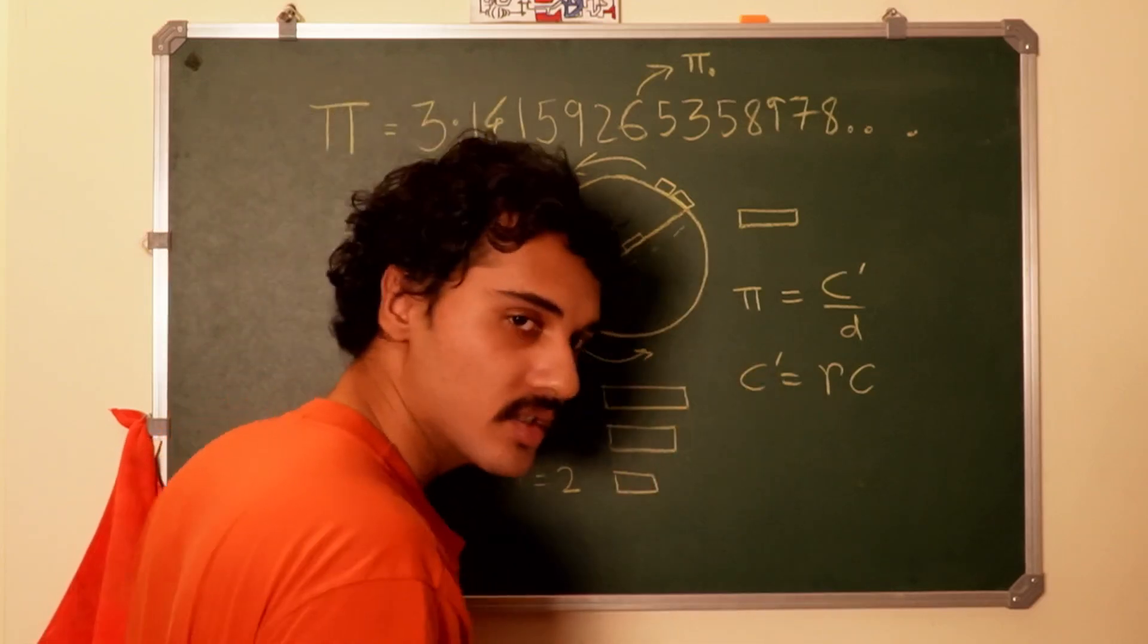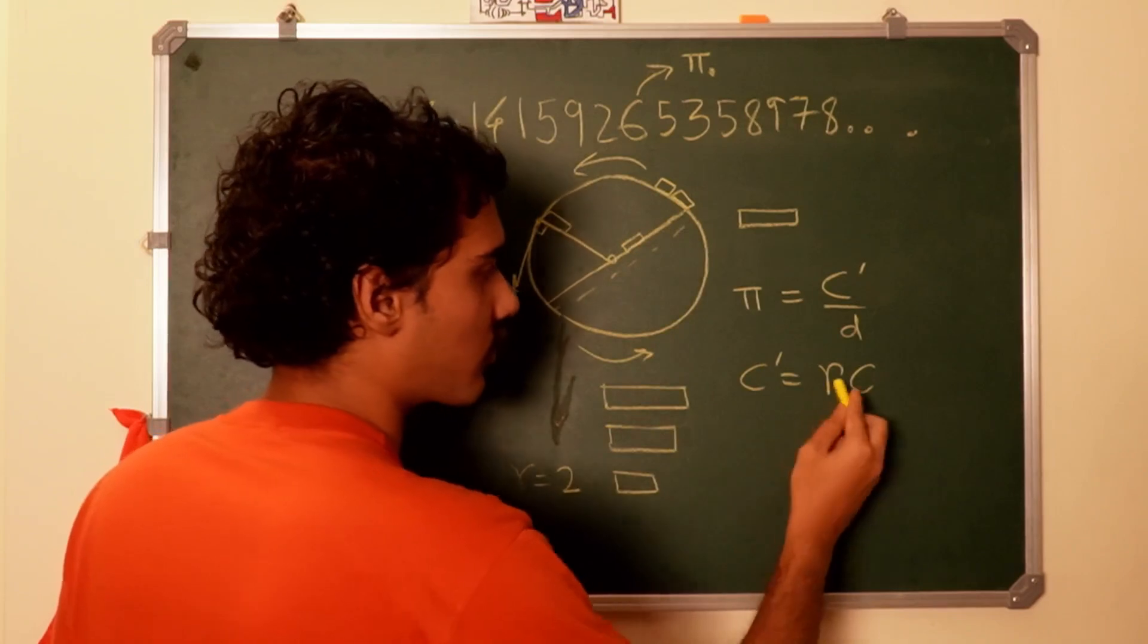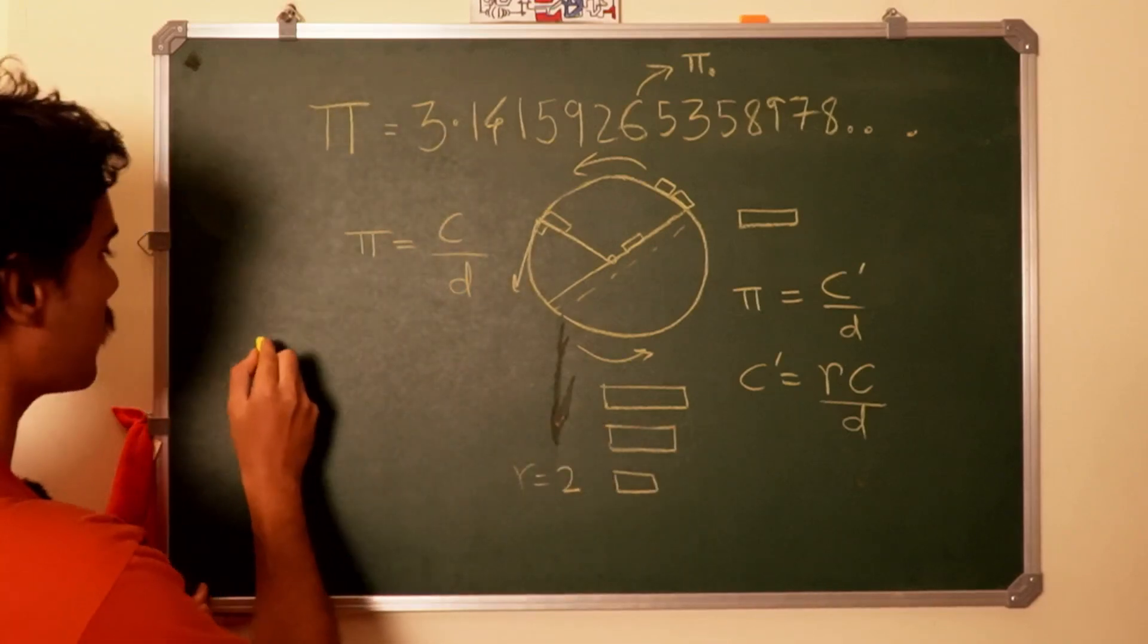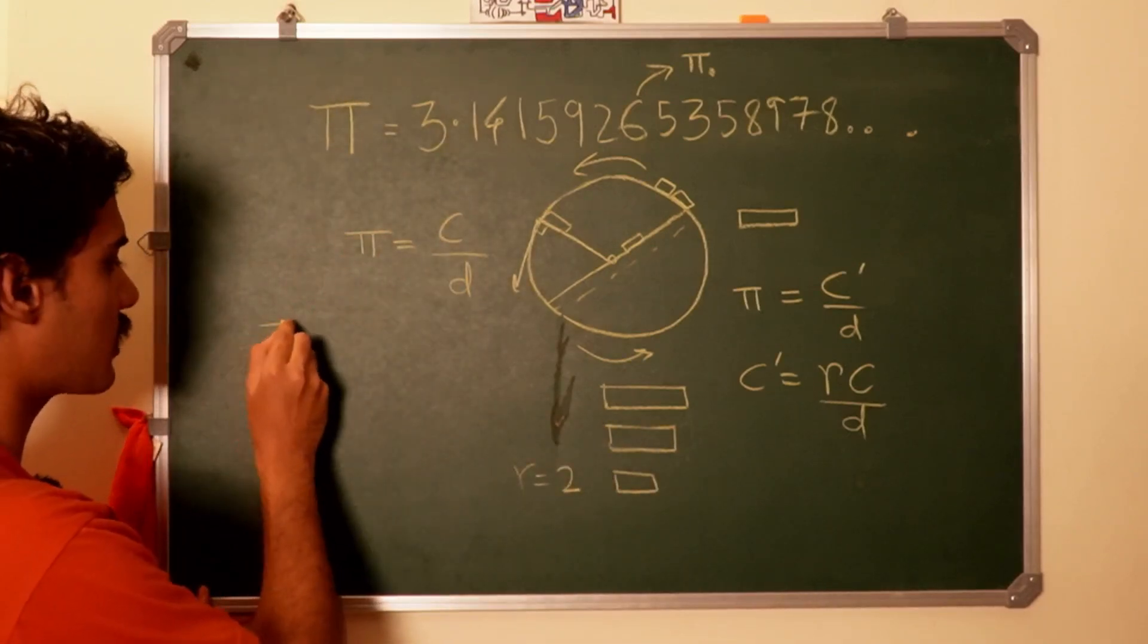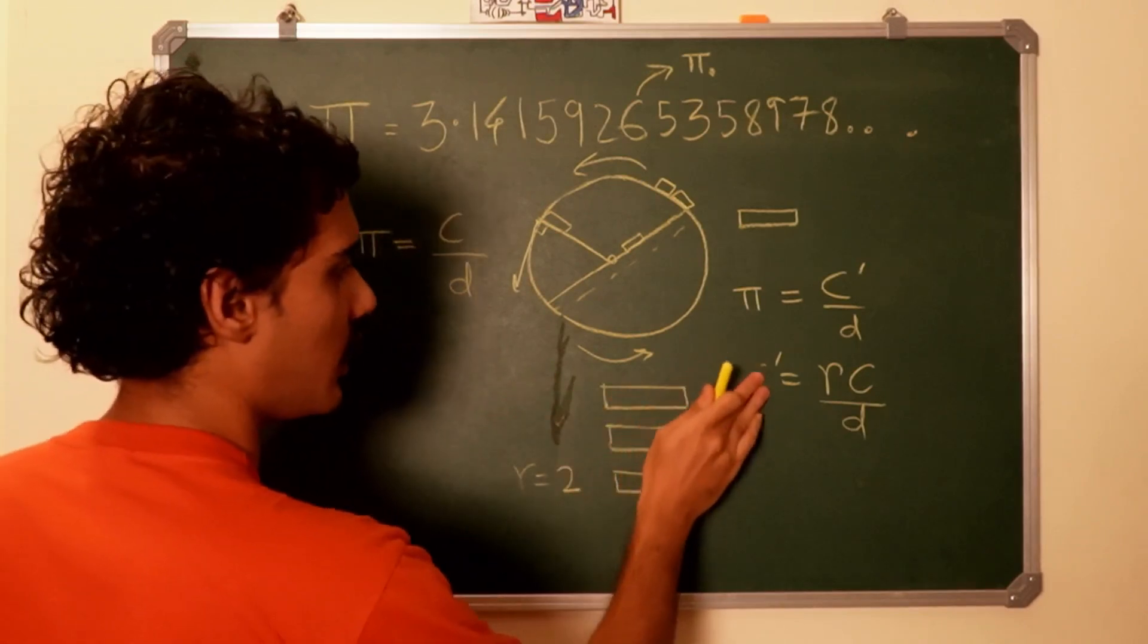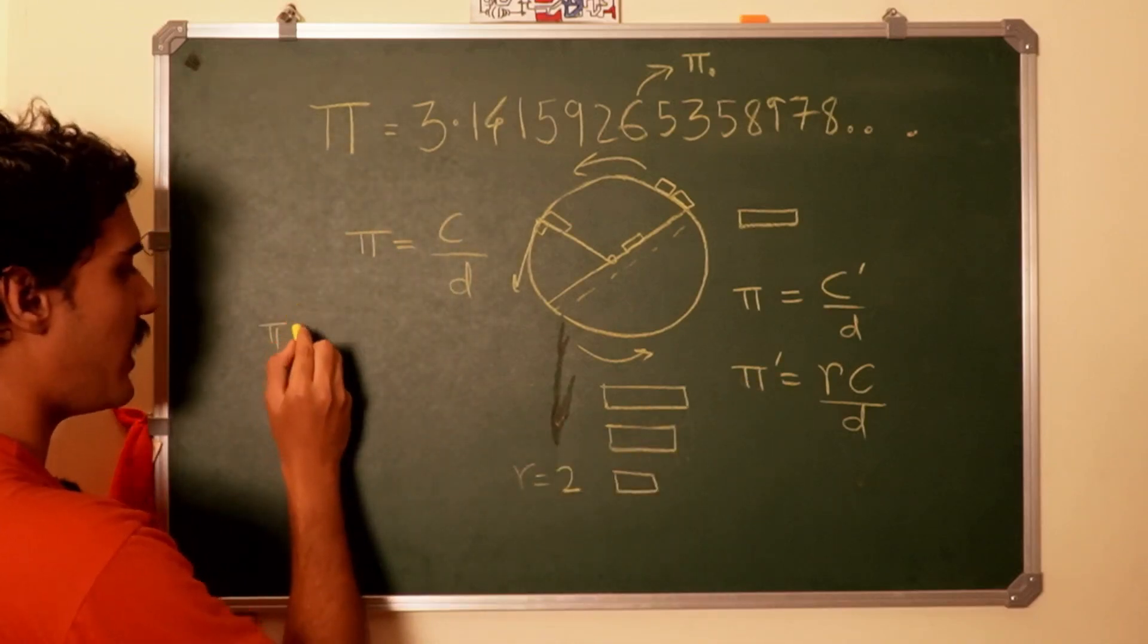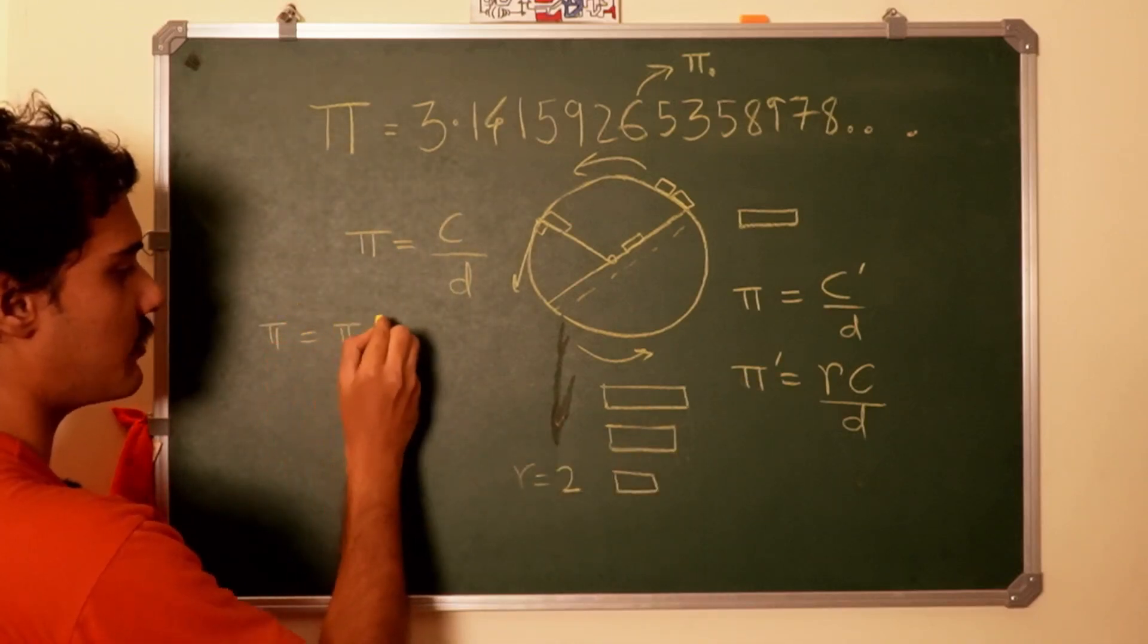So this would be pi—in a spinning system pi would be—oh sorry, I mean this is pi. So pi would be pi naught times gamma.